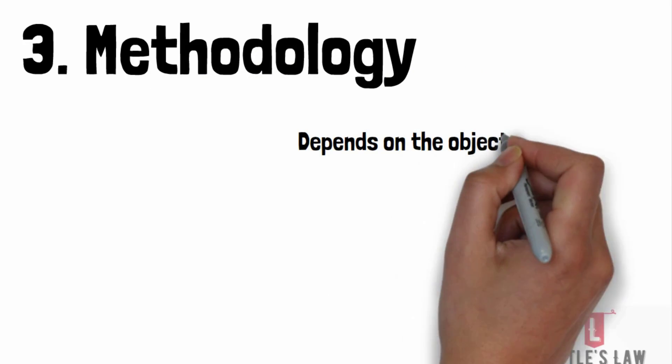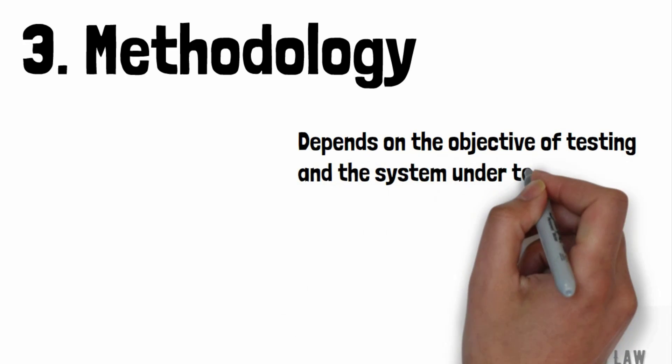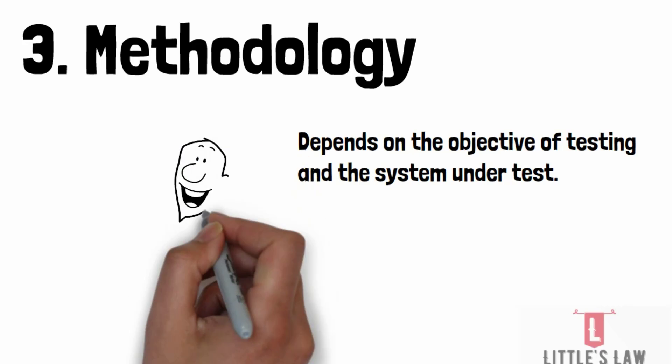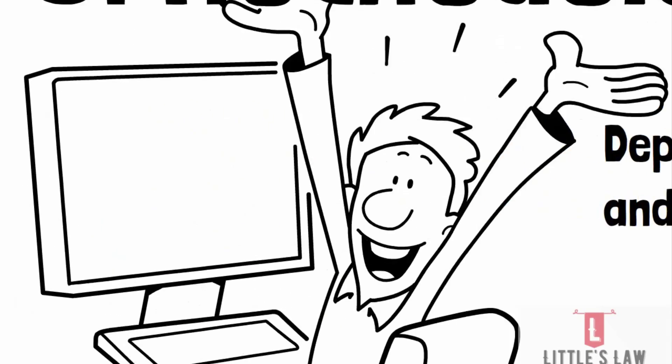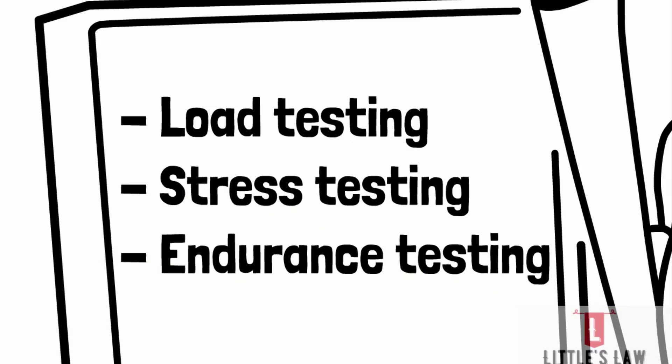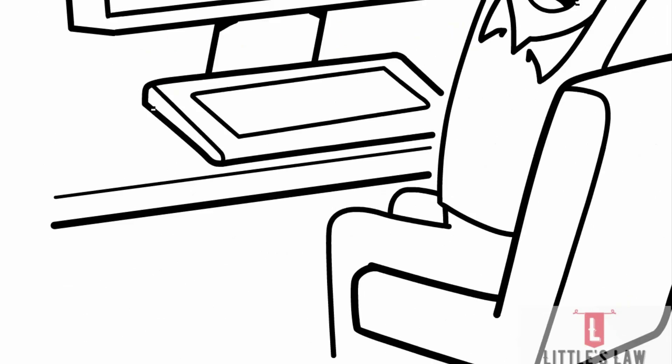The third pointer is methodology. The methodology used for performance testing depends on the objectives of the testing and the system under test. For example, load testing may be used to simulate a large number of concurrent users; stress testing may be used to test the system's ability to handle peak loads; and endurance testing is used to test the system's performance over an extended period of time. The methodology must be defined and documented before testing begins.